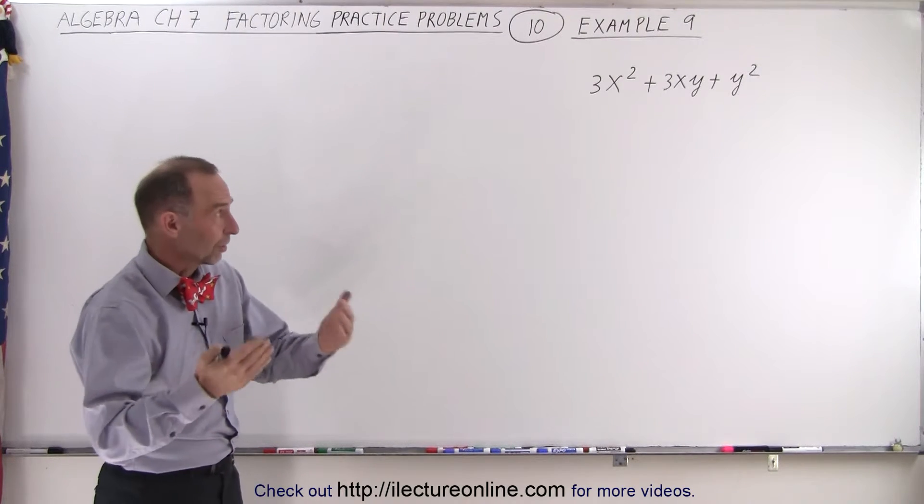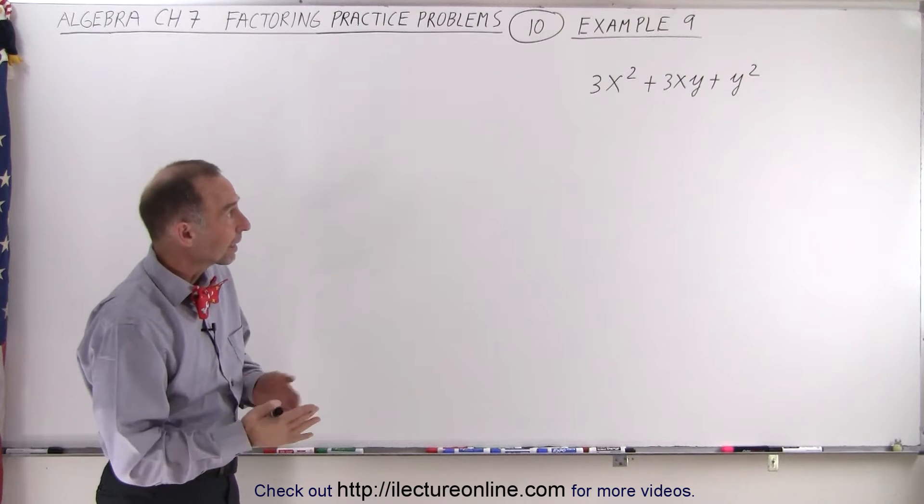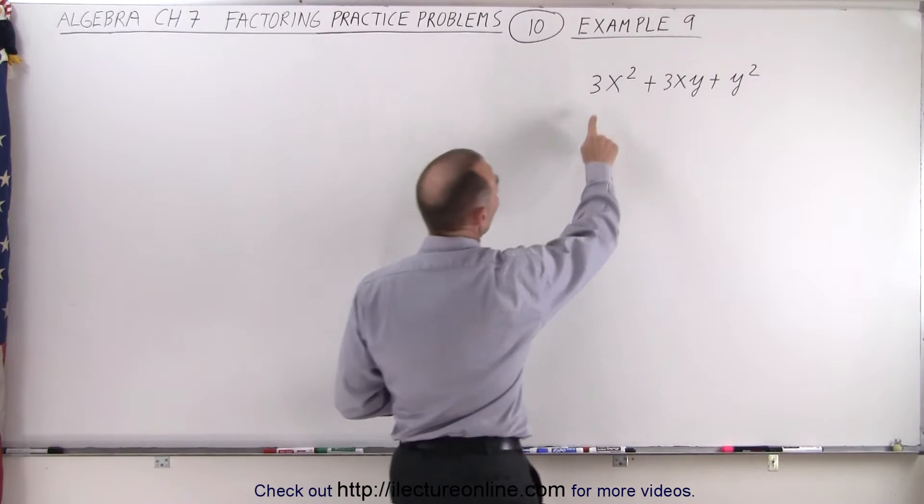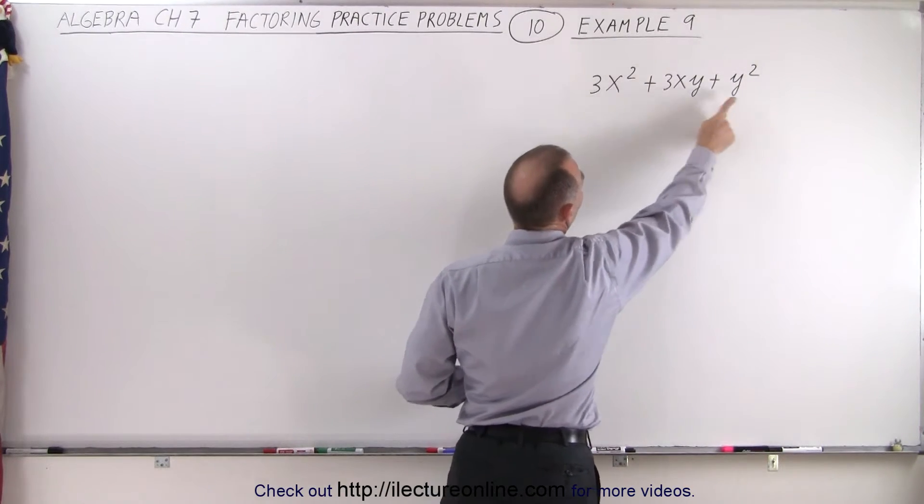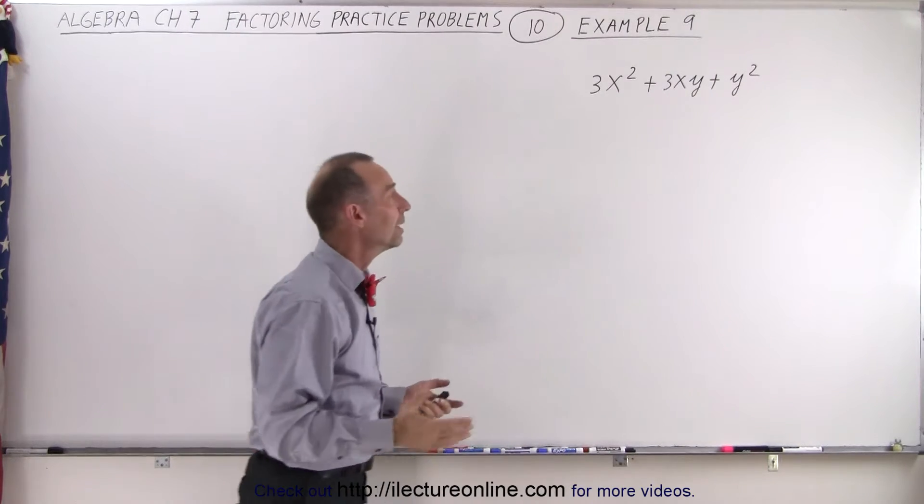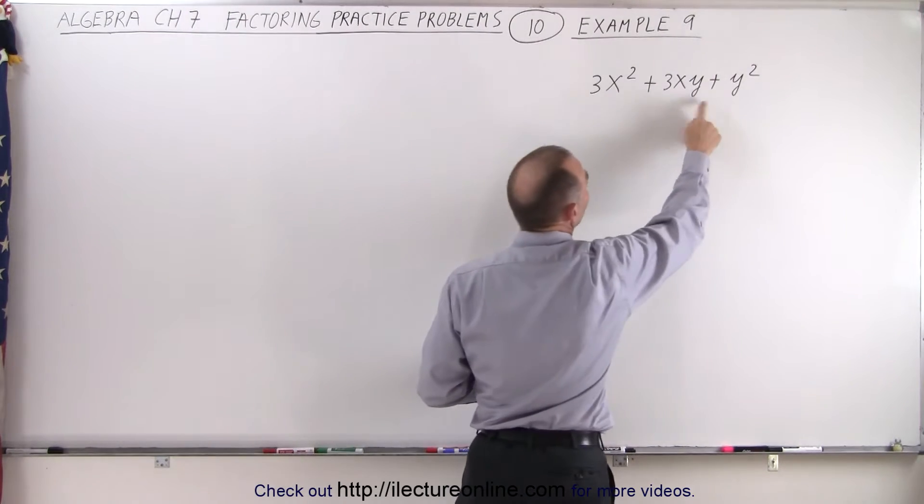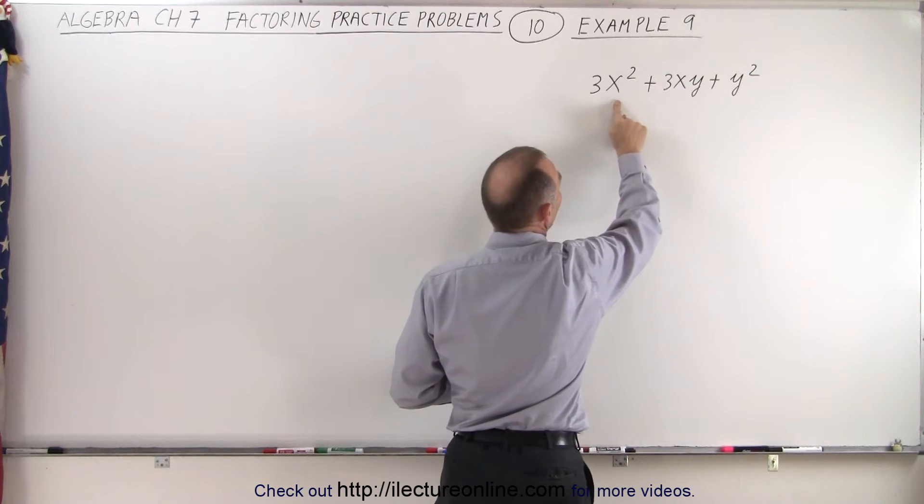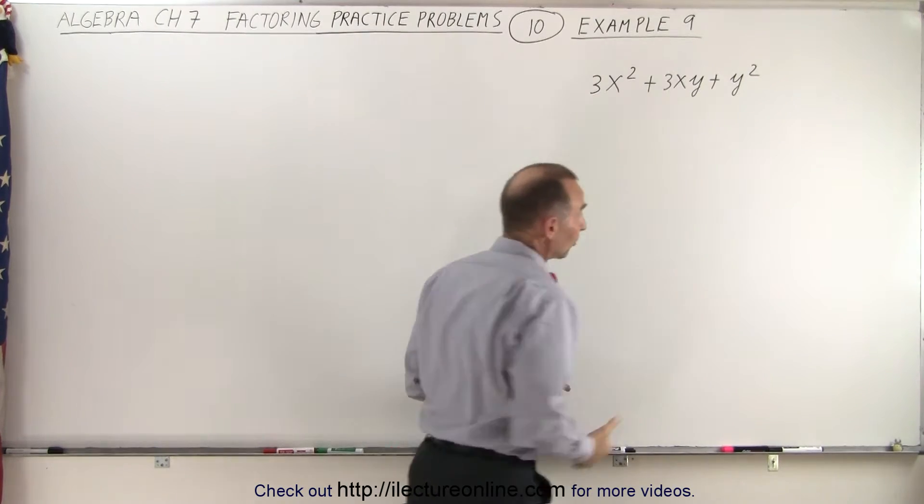We're going to use our general technique. First, can we factor out a common factor? It almost looks like 3 could be common, but the third term doesn't contain 3. Notice it might have been y, but the first term doesn't have a y. It's not x because the third term doesn't have x.